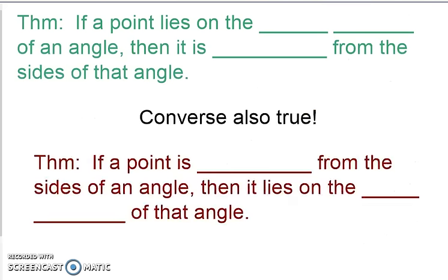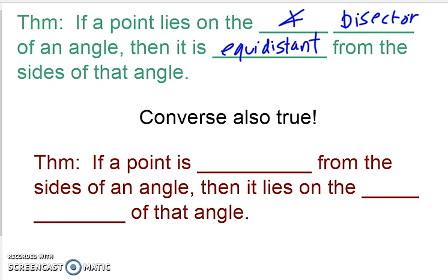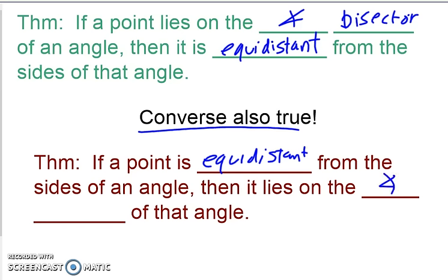I want to introduce a related theorem, which says that if a point lies on the angle bisector of an angle — so we're not talking about the perpendicular bisector anymore, we're talking about the angle bisector — then it is equidistant from the sides of the angle. The converse is also always true: if a point is equidistant from the sides of an angle, then it lies on the angle bisector of that angle.